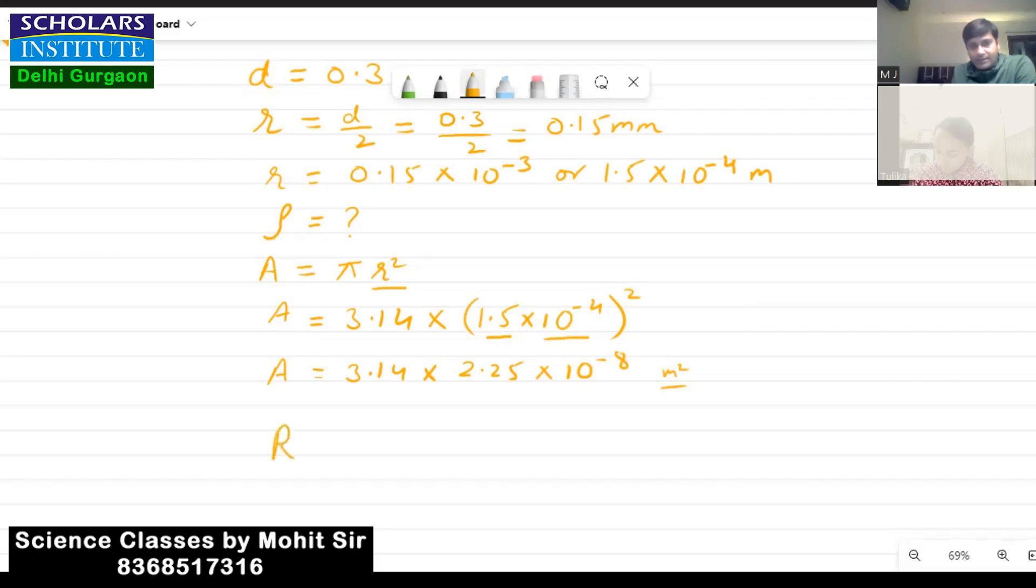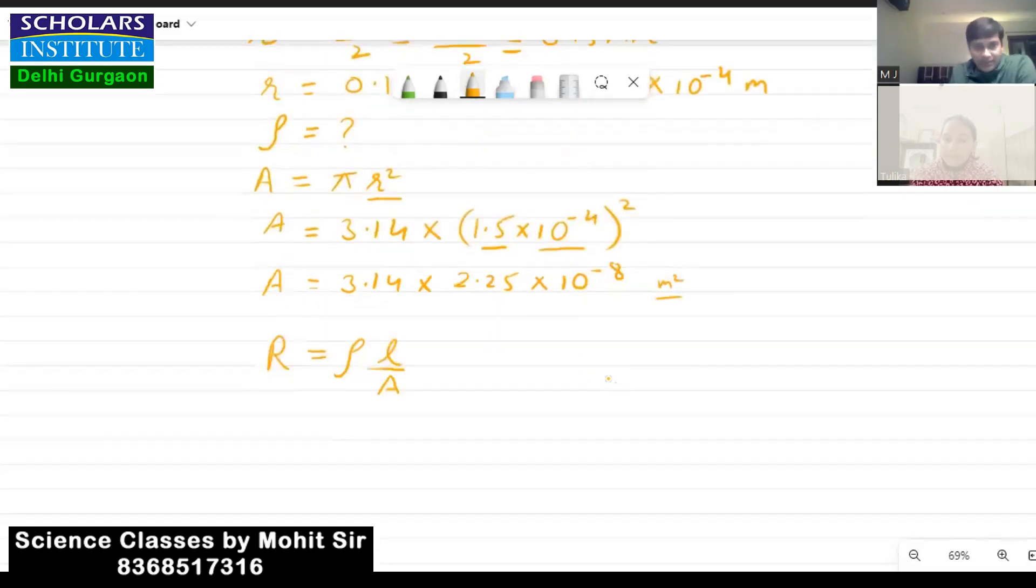Starting formula is this. From this, the resistivity will be given by rho is equal to resistance into area divided by length.